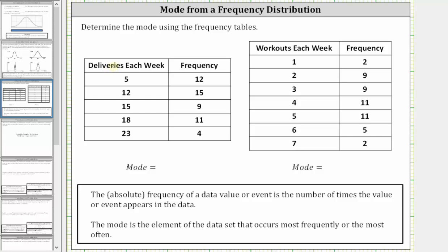So looking at the first table, in the first column we have deliveries each week, in the second column we have the frequency.